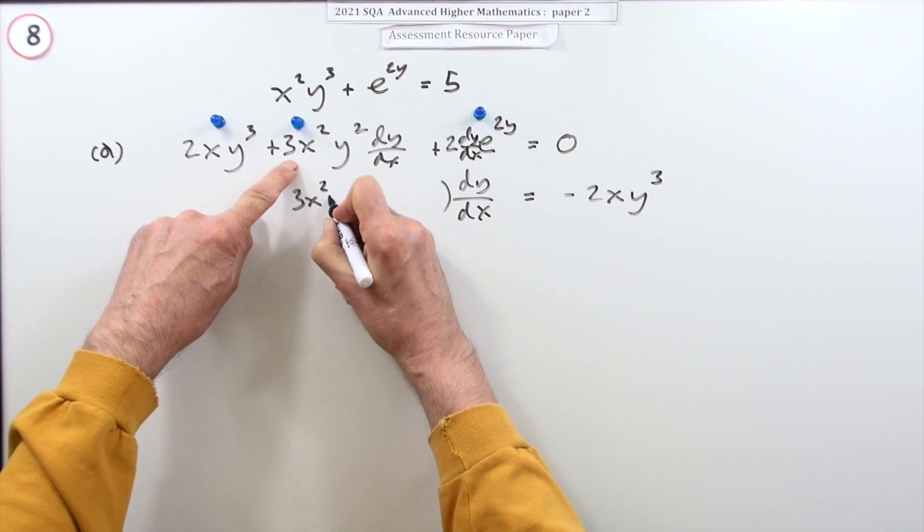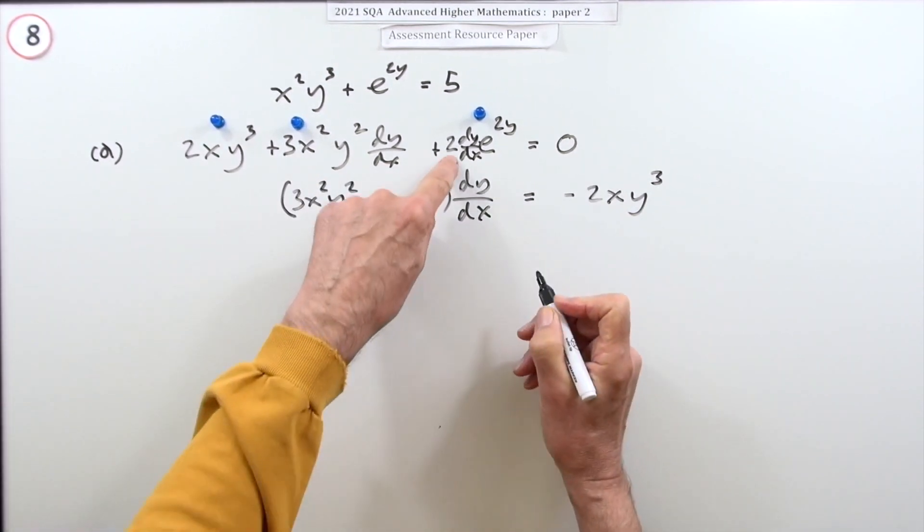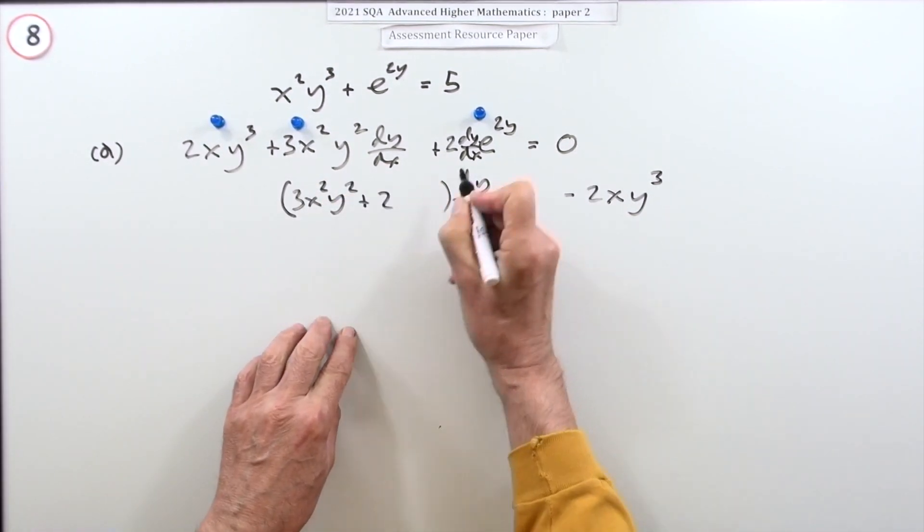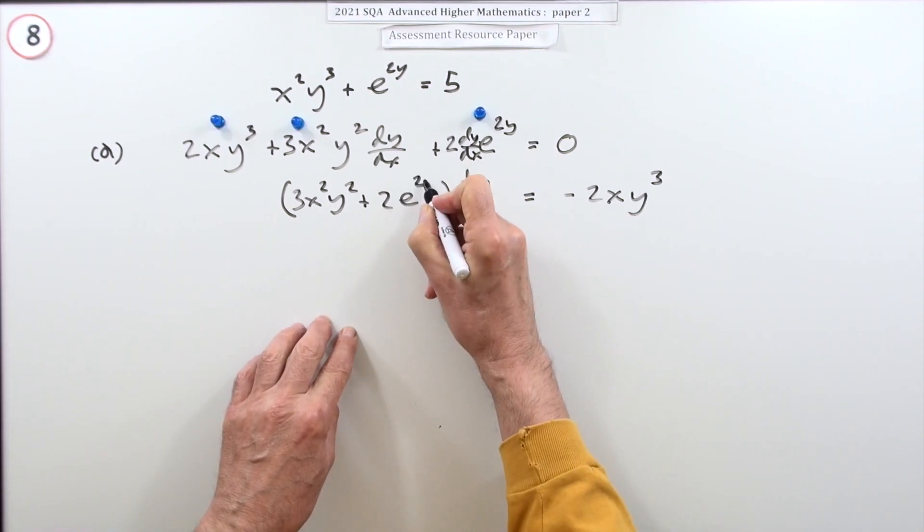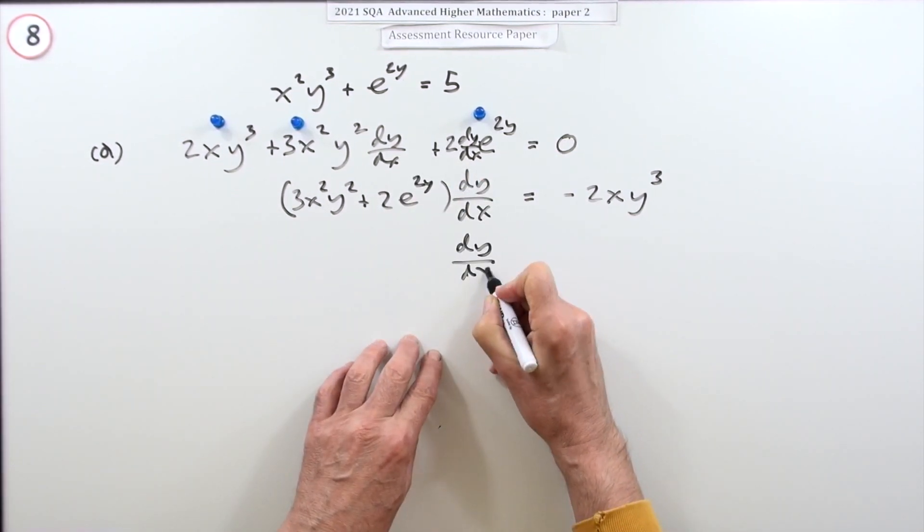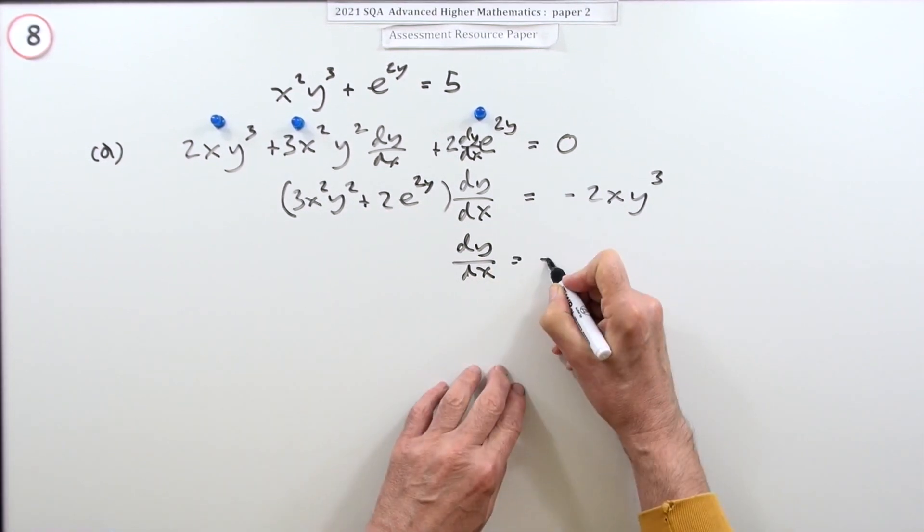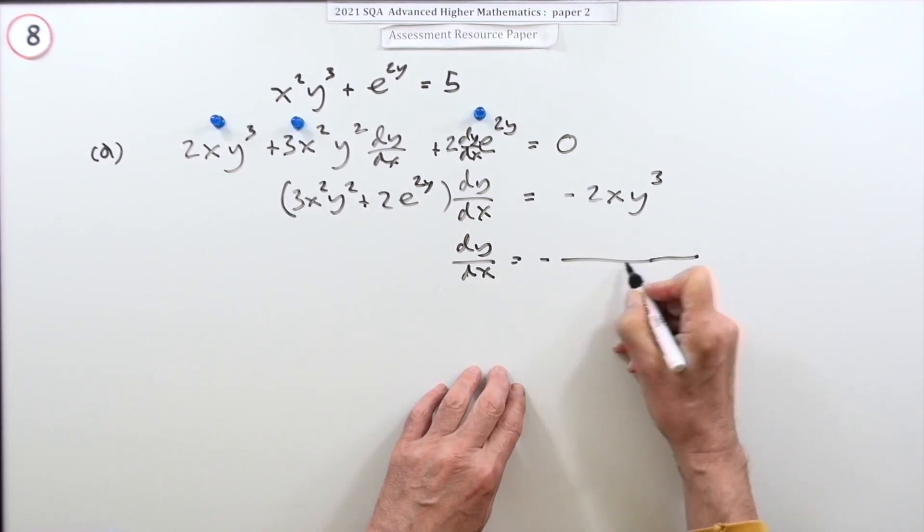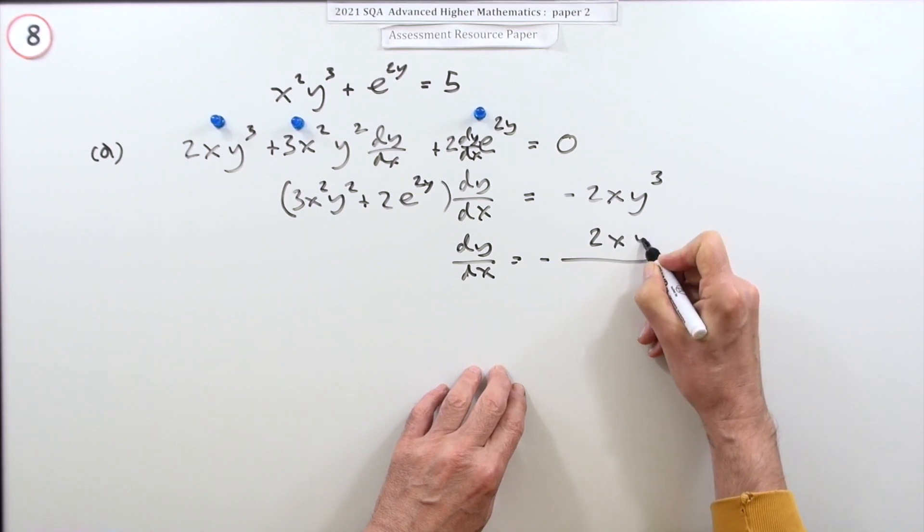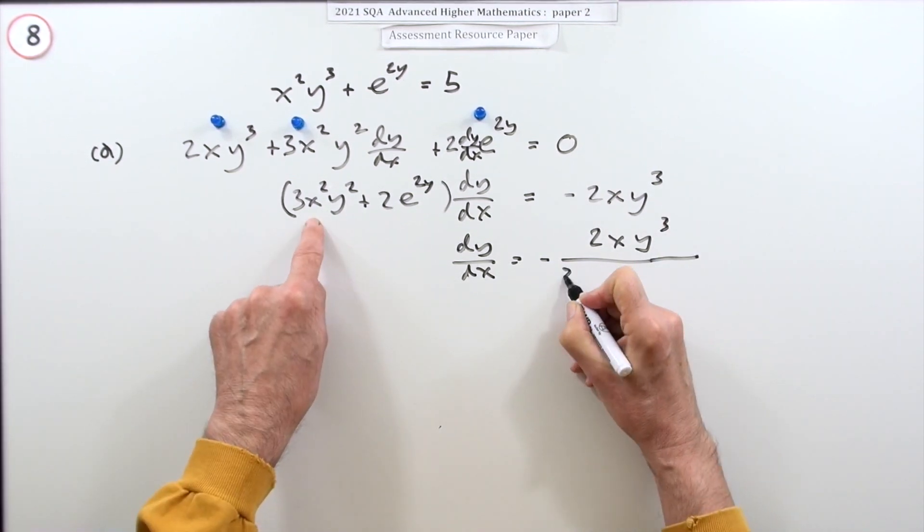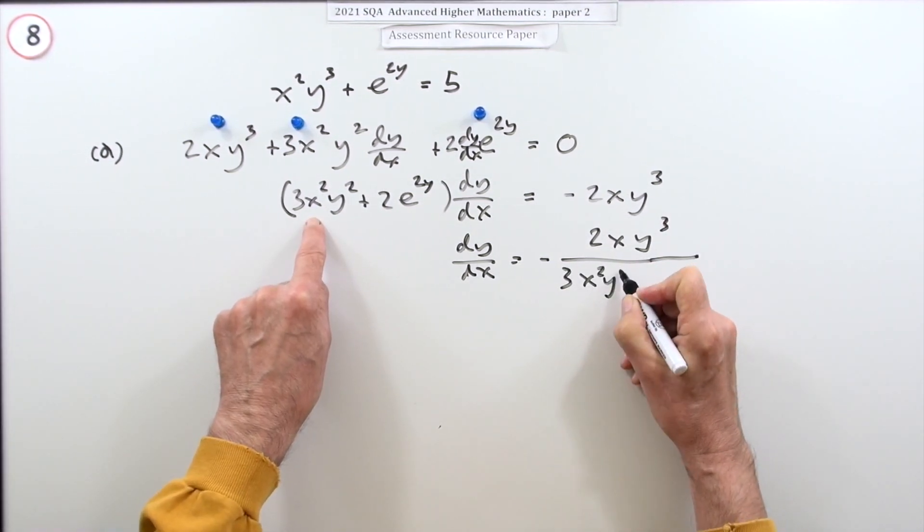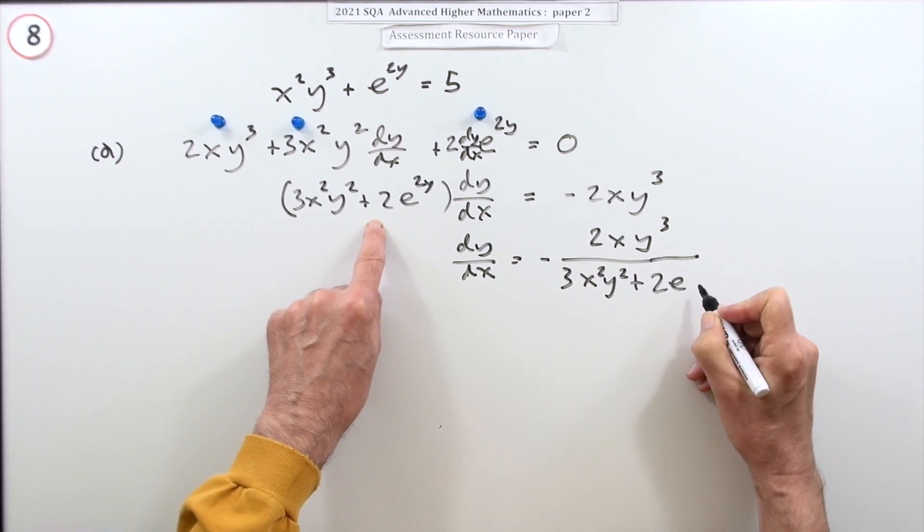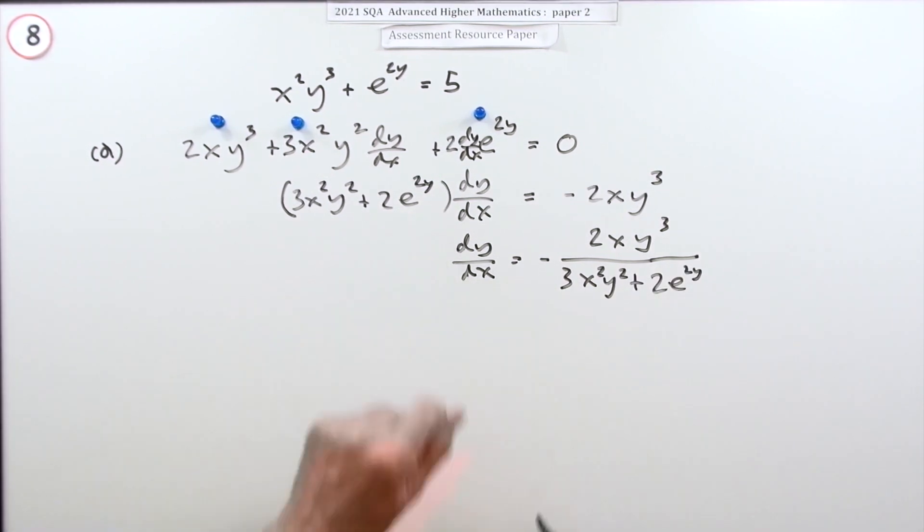So what have I got altogether for dy/dx? With these two I've got 3x²y² and I've got plus 2e^(2y). So finally take that across and divide. I'll place that negative in the middle: dy/dx = -2xy³ / (3x²y² + 2e^(2y)) for that mark.